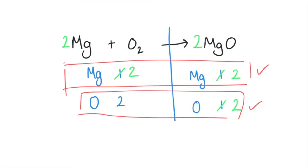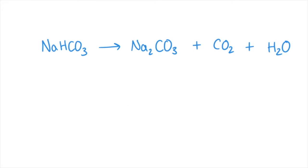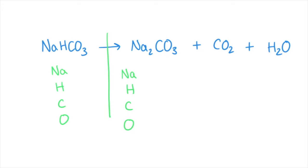In this reaction, sodium hydrogen carbonate reacts to make sodium carbonate, carbon dioxide, and water. We're going to do the same as last time — write down all of the elements that appear on the left-hand side and all of the elements that appear on the right-hand side. They should be the same again, and I've written them in the same order. So we've got one sodium, one hydrogen, one carbon, and three oxygens. On the right-hand side, two sodiums, two hydrogens, two carbons. Remember it appears in two places, and oxygen appears three times and makes a total of six.